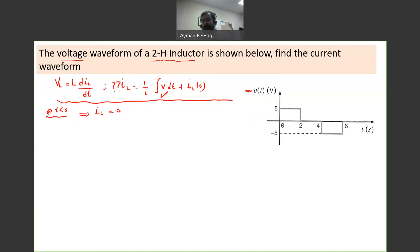Now we move to the second period, between 0 to 2 seconds. The current IL equals 1 over L, so 1 over 2, integration from 0 to T. Why to T? Because I want to find the current as a function of time in that specific period. I don't want to end up with one number. My intention is to find the function of the current.